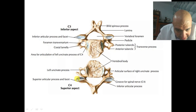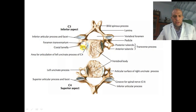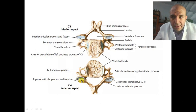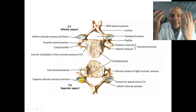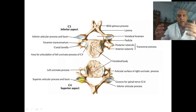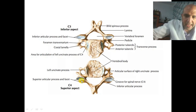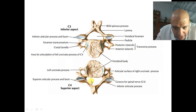Above the pedicle there is a superior articular process (facet), and below on the lower side is the inferior articular process. As I mentioned, in the lumbar spine the superior articular facet is directed anteriorly and the inferior articular process directed posteriorly — they are located posteriorly but their articular surface faces anteriorly. The nerve exits the spinal canal coming out of the spinal cord as a root.